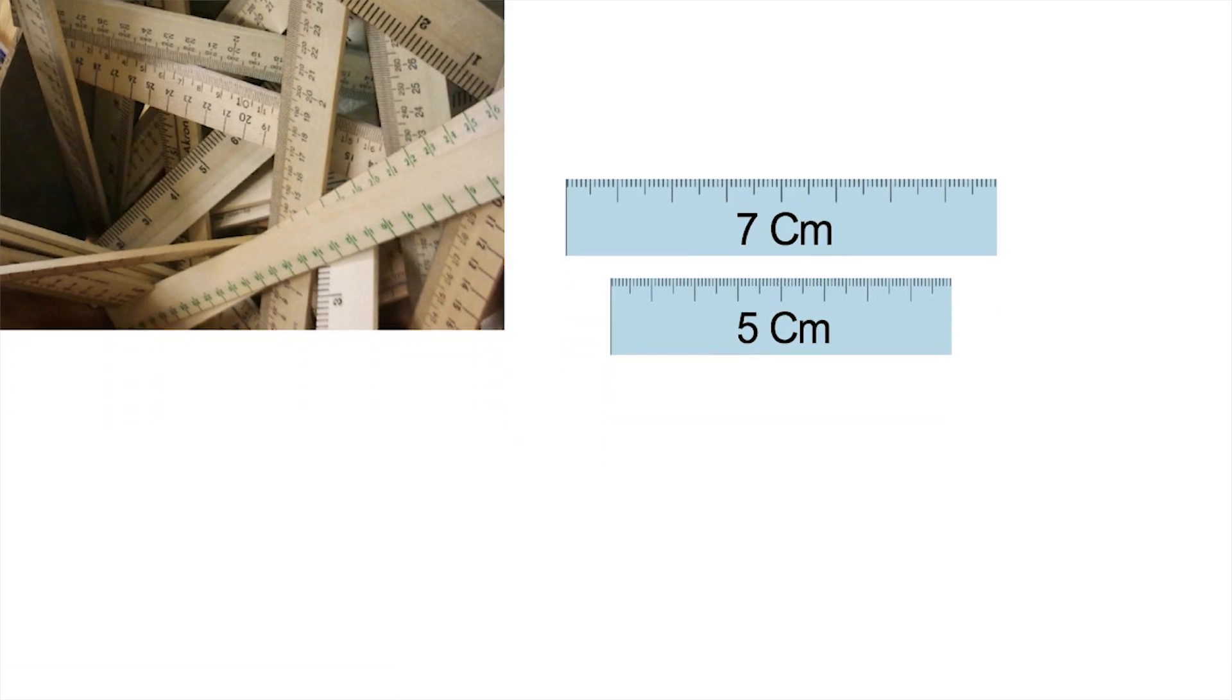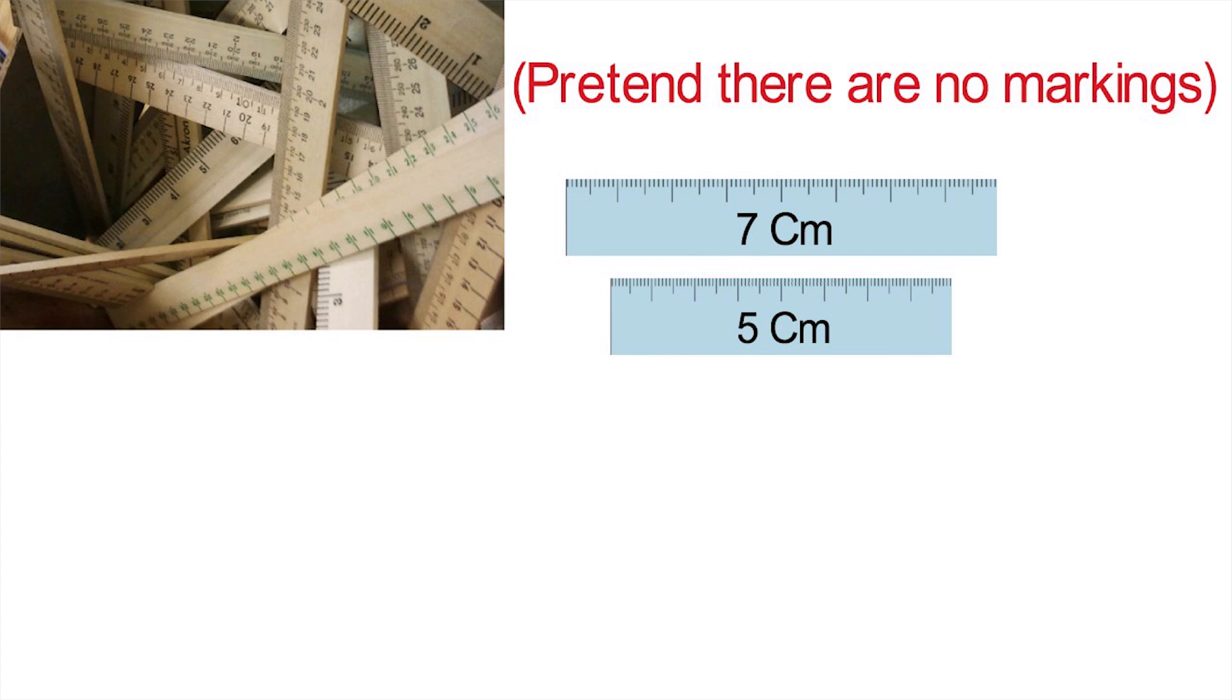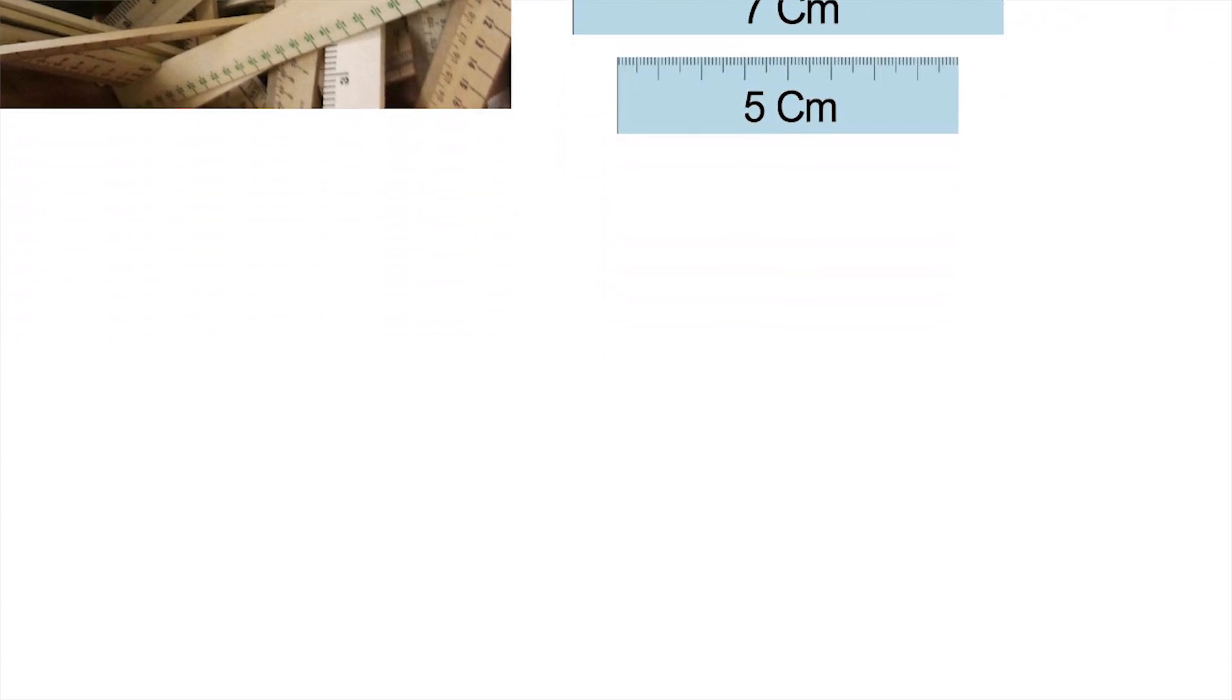Let's say we have an infinite amount of rulers. Half of them measure 7 centimeters, and the other half measure 5 centimeters. Yes, I know it's a small length, but just go with it. There are no markings on them, and we cannot estimate anything, like what one half or a quarter of the length is. We only know that they measure 7 and 5 centimeters, respectively.